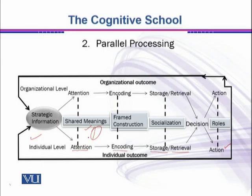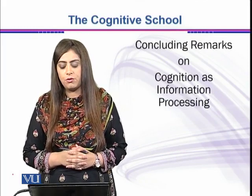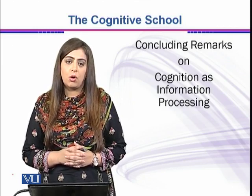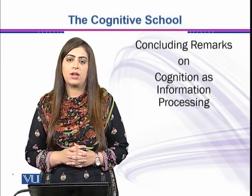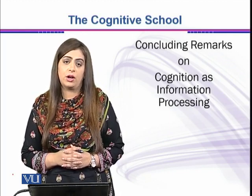There is a strategist sitting there who is observing all those things — all those groups, all those individuals inside the organization — and all the shared meanings, framed constructions, and socializations among those individuals. That strategist tries to capture all of that information in his mind and make decisions. This is how parallel processing inside the organization works. Concluding this third video of the cognitive school of thought, we must know what the information processing model is for the psychologist and for the strategist, and how information is processed in the mind of an individual, a strategist, and an organization.